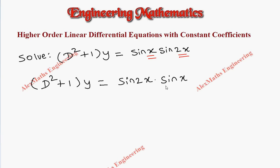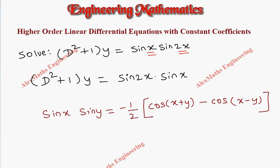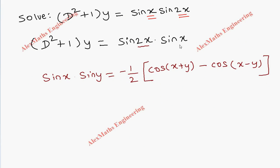Now I'm going to apply a formula. When you have sin x · sin y where both terms are sine, it equals minus one-half times the bracket: cos of the sum of those two angles minus cos of the difference of those two angles. So if I apply the formula here, this acts as x and the other as y.